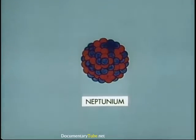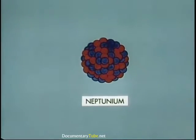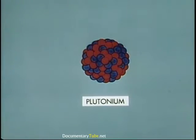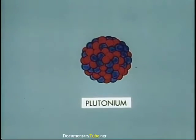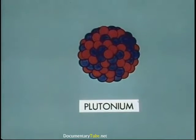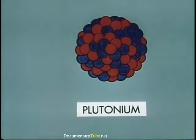Neptunium is a malcontent, and it in turn emits a beta particle, turning into element 94, plutonium. Even heavier elements have been developed, but we can stop with plutonium because it's one of the basic ingredients of an atomic explosion.